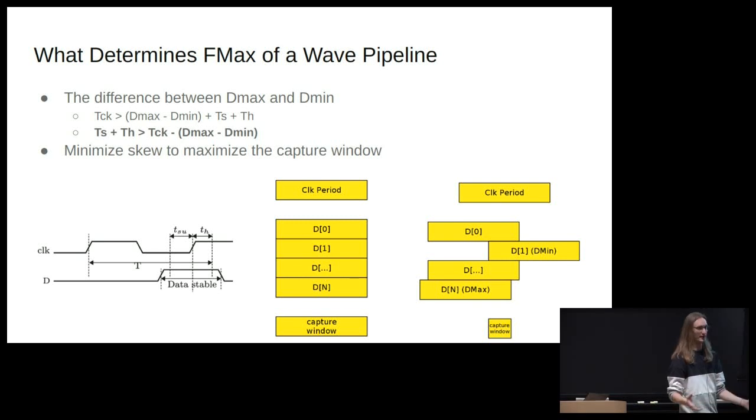If we have all of our delay paths equalized, then what it's going to look like at the output is this first picture, where we drove the inputs to the circuit for one clock period, and because there was no skew, they arrive at the output for one clock period, and that's a big capture window. If we introduce skew to the system, then now we're lowering our capture window because the maximum delay is going to arrive later, the minimum delay is going to arrive first, and everything else in between.